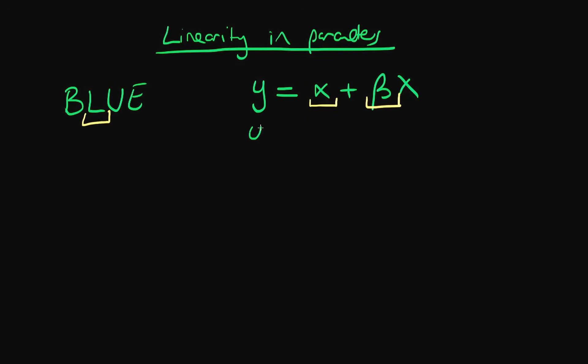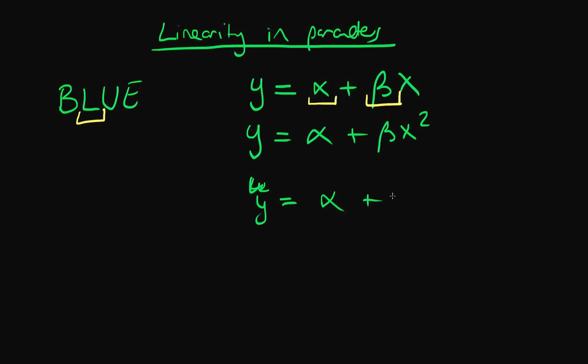Note that if I had the population process which was Y equals alpha plus beta X squared, or Y equals alpha plus beta ln X, for example, then both of these models, even though they are nonlinear in the independent variables, are both linear in the parameters, the parameters being alpha and beta. So any of these three models would be absolutely fine to estimate via least squares.